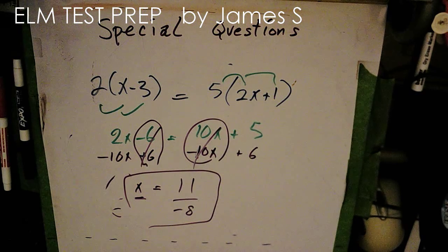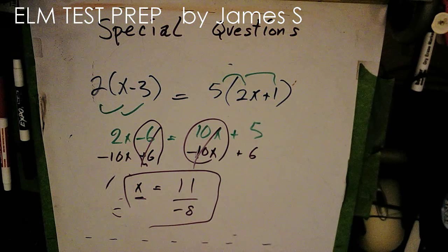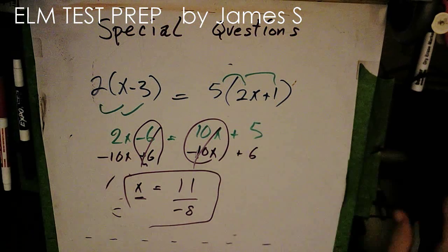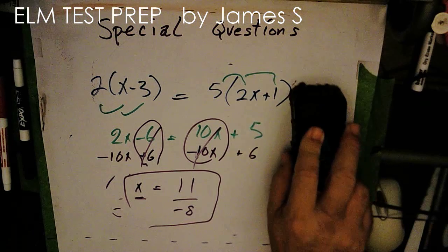Now, originally it looked very complicated because our x was in the denominator. But what I did was I just flipped both sides. Since both sides were fractions, I just flipped them.